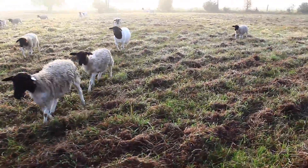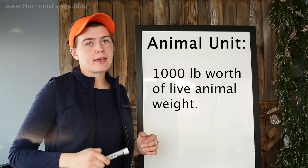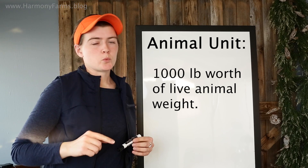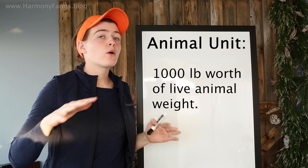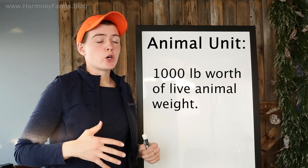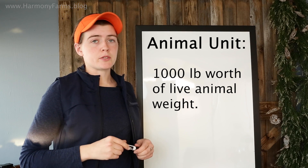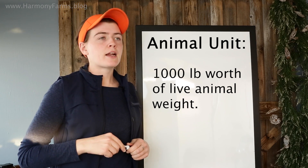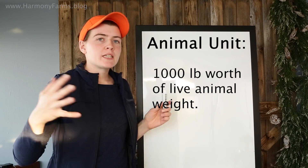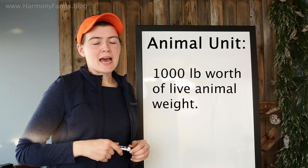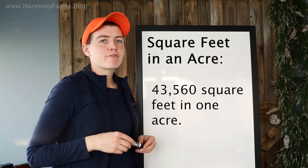I'm going to start with a definition of two terms. Figure number one is the animal unit. When I'm plotting out my rotational grazing schemes, I go by animal units, which is one thousand pounds worth of animal. I don't necessarily go by how many cows or sheep are on a plot, but rather the total weight of the animal units. For example, my flock of 25 sheep is about a three animal unit equivalent. This allows you to go into multi-species grazing without confusion — just add up the total weight of all the animals.